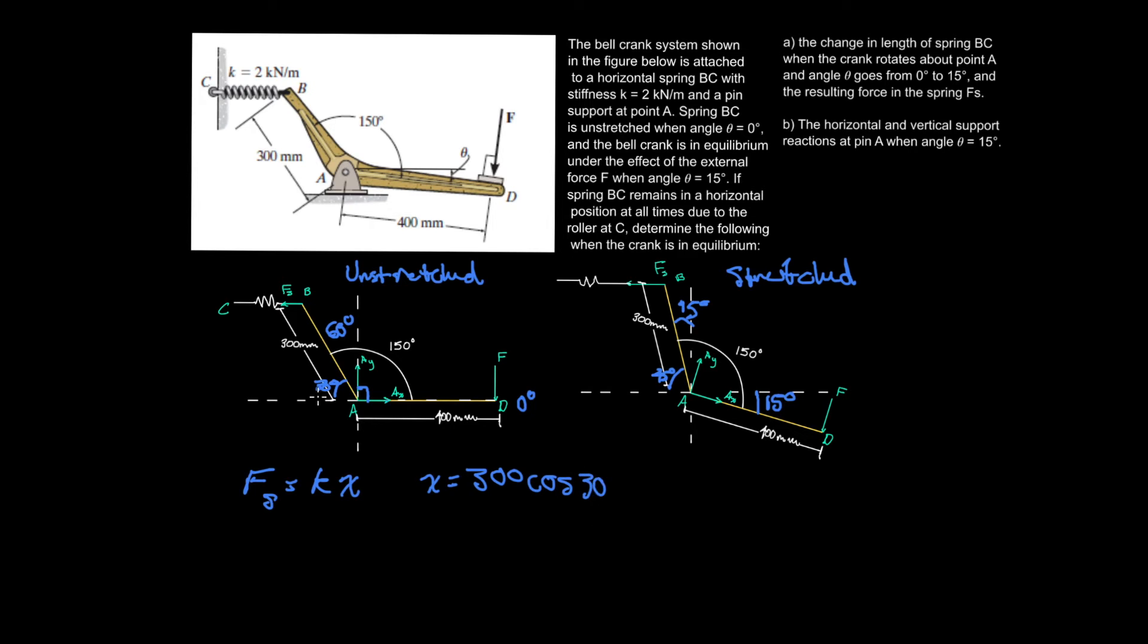Where this is the 30 we're talking about, because we're going to talk about this horizontal distance here and this horizontal distance here, minus 300 cos 45. And so that's going to give us that x is equal to 47.67 millimeters.